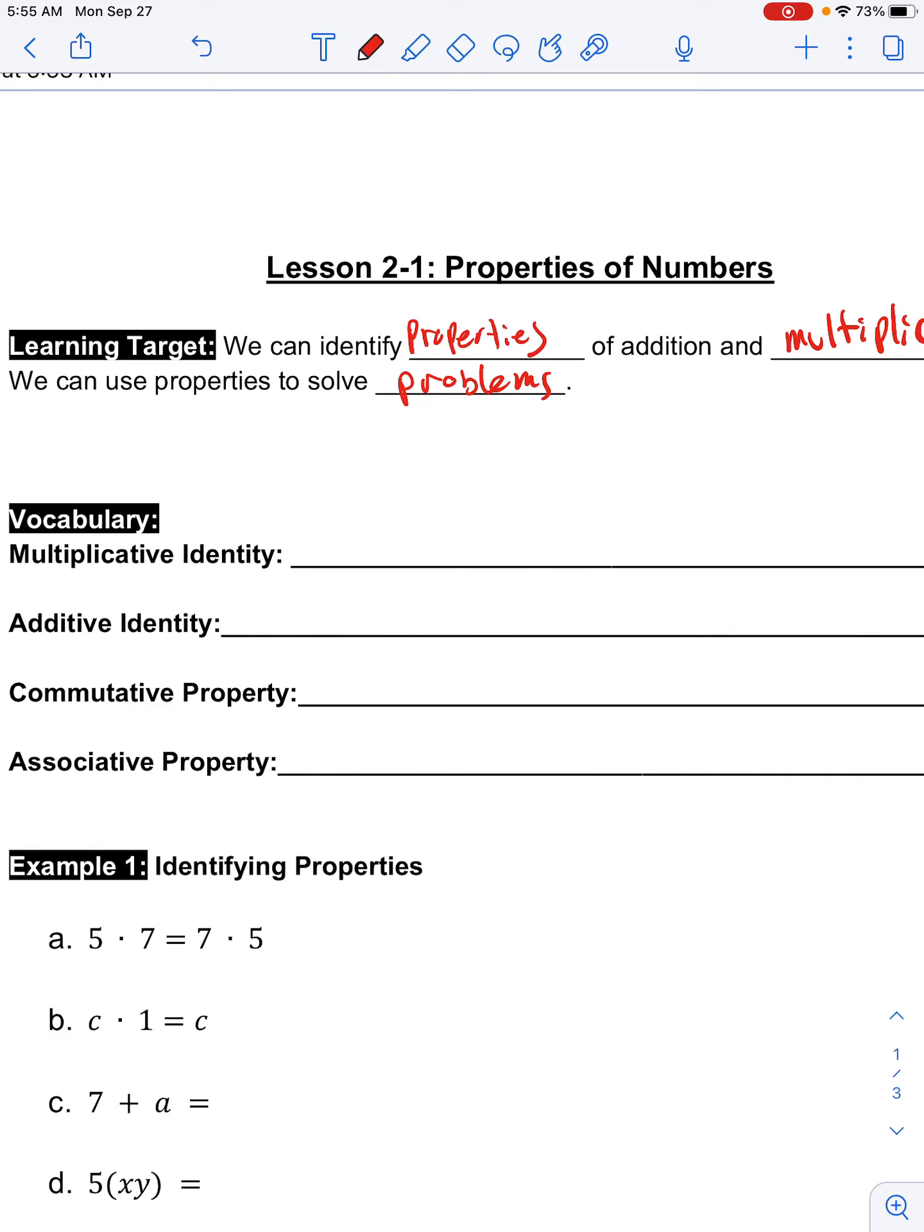One of the properties we're going to talk about today is the multiplicative identity. This is something you already know. You may not have called it this, but this identity states that anything multiplied by one equals itself. So I could say a times one equals a. That would be our generic term. A could be anything. You could say five times one equals five. So anything multiplied by one is going to give you the original value, the original amount.